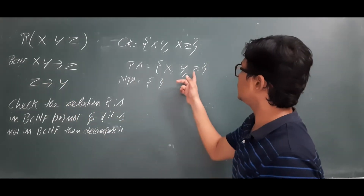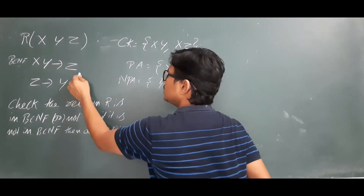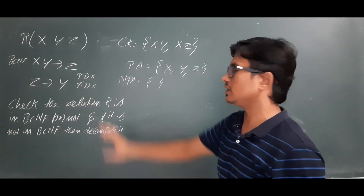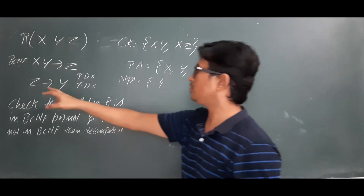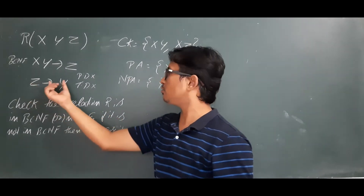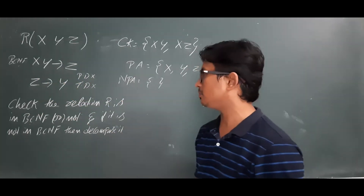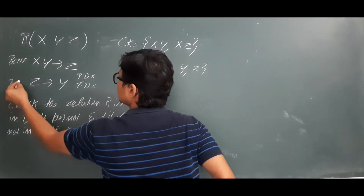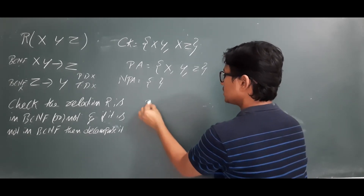Now consider Z → Y. Z is a non-prime attribute and Y is a prime attribute, so it is not a partial dependency and it is not a transitive dependency — I can say it is up to 3NF. Now checking for BCNF: Z is not a candidate key, it is only part of the candidate key. Since the right-hand side is a prime attribute it is not partial dependency, but since the left-hand side is not a super key or candidate key, I can say that this FD is not in BCNF.